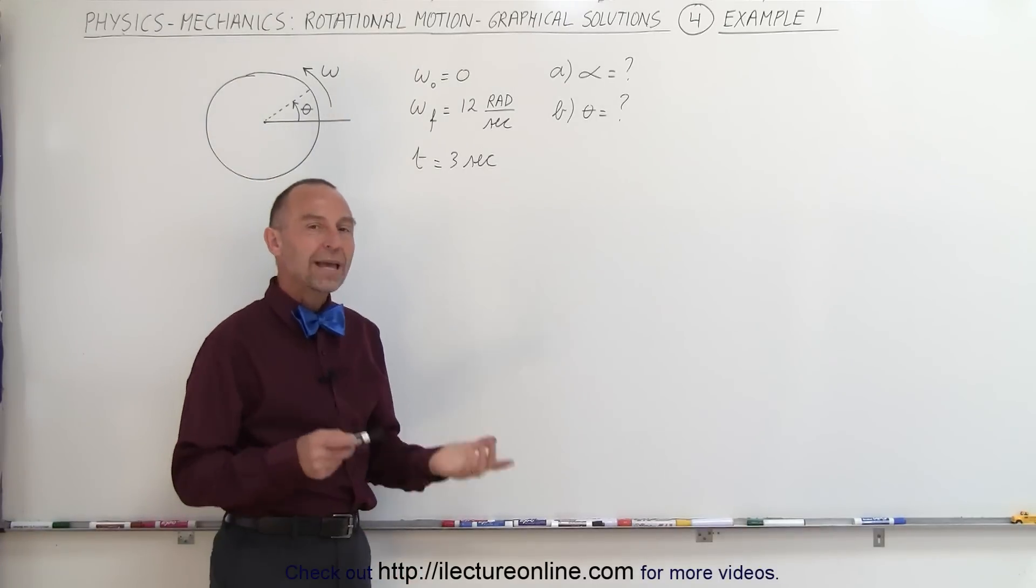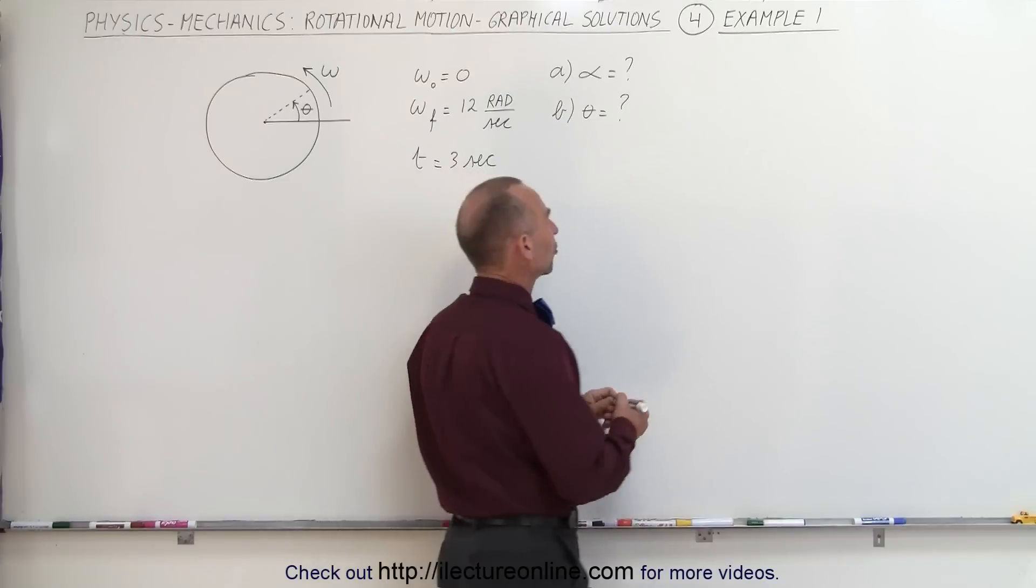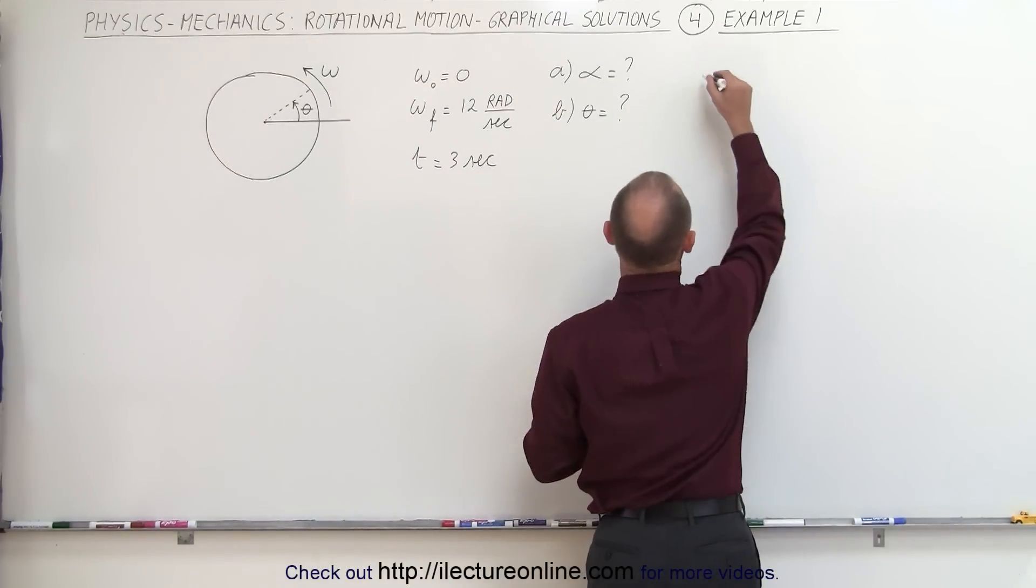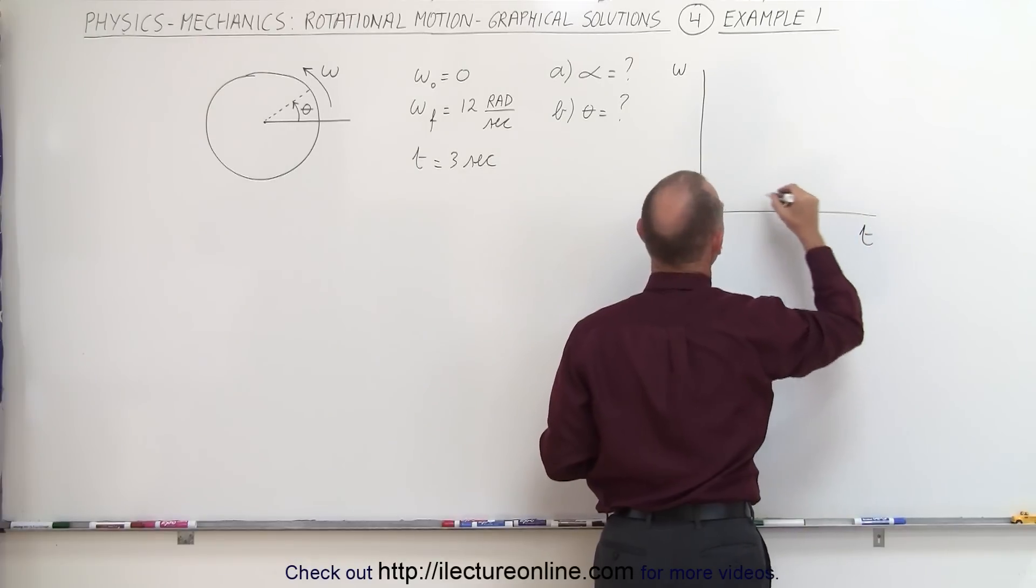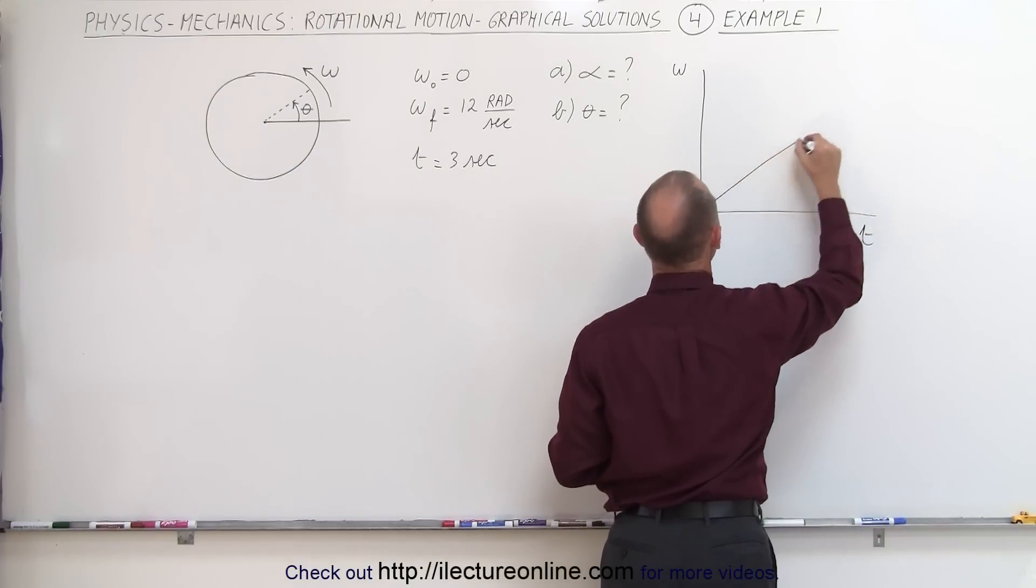Usually the omega versus time graph is the best graph to start with, so let's do that. Let's start with drawing an omega versus time graph and with an angular acceleration that's non-zero it'll be a straight line.